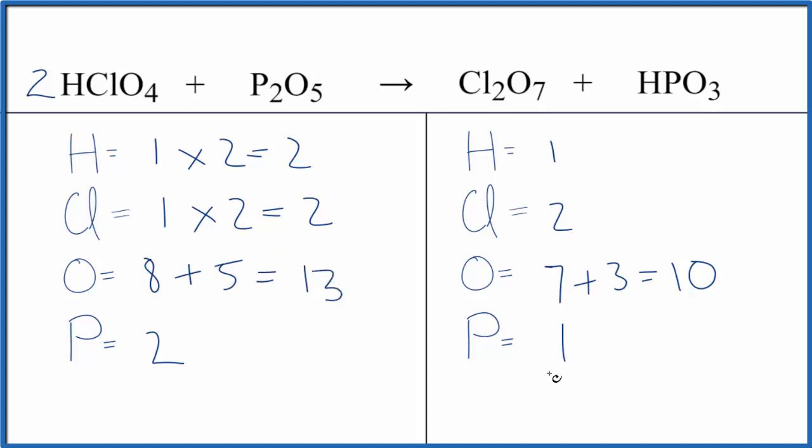Let's do the phosphorus next because we're leaving the oxygens and the hydrogens until last. Put a two in front of the HPO3. So now one times two. That actually balances the hydrogens. One times two. We have our phosphorus atoms balanced.